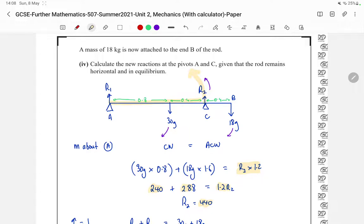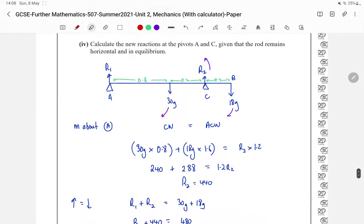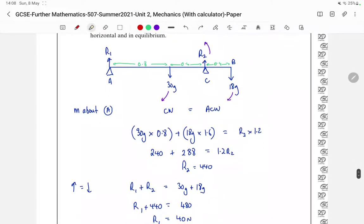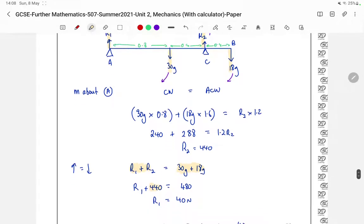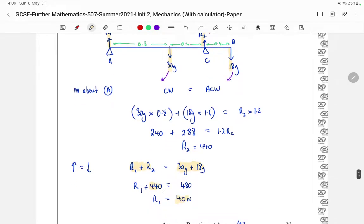Now we're asked to find both R2 and R1. But remember from before that the upwards forces must equal the downwards, so the reactions must equal the weights. So R1 plus R2 must equal 30g plus 18g. We've just worked out one of the reactions, so the second reaction therefore is 40 newtons.